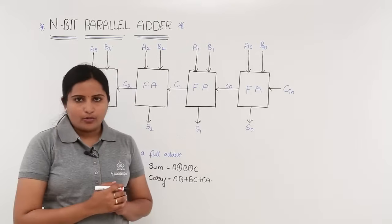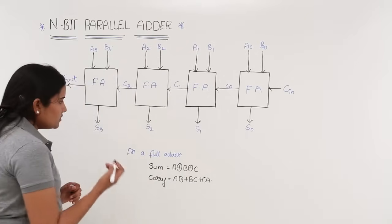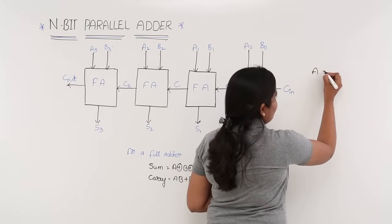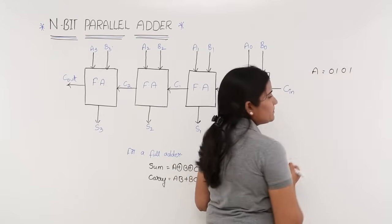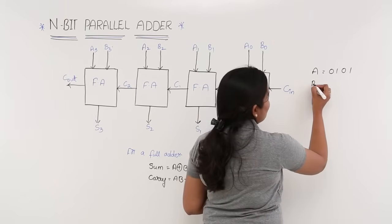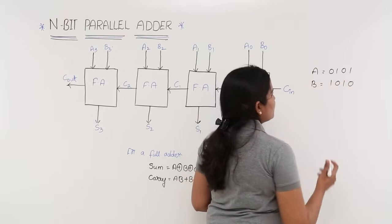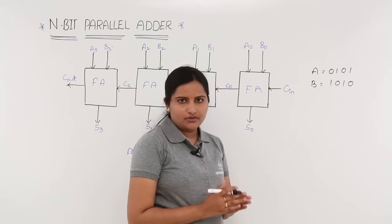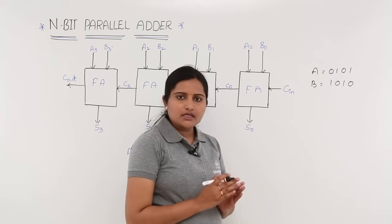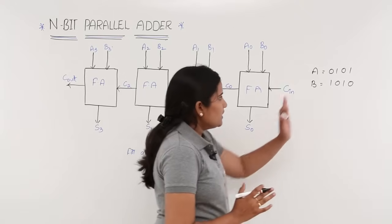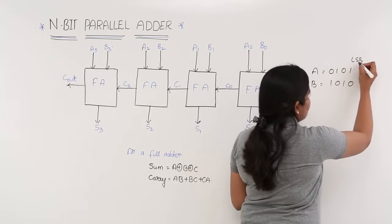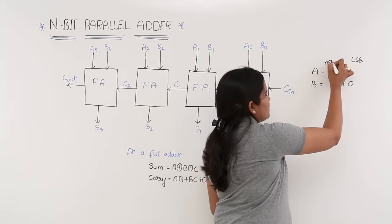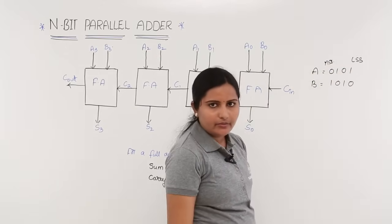For example, I am taking a problem here: to add 2 four-bit numbers, that is A = 0101 and B = 1010. To add these two 4-bit numbers we need to consider a 4-bit parallel adder. Here, the bits 1 and 0 are called LSB bits, and 0 and 1 are called MSB bits — these are the least priority and most priority bits respectively.